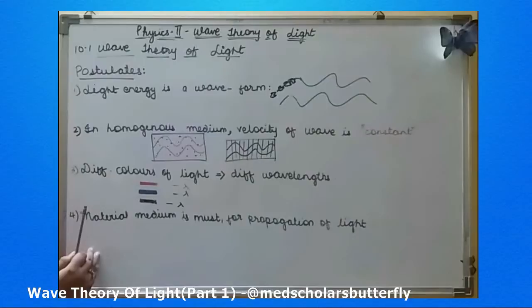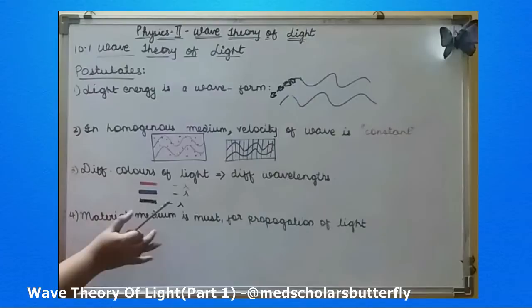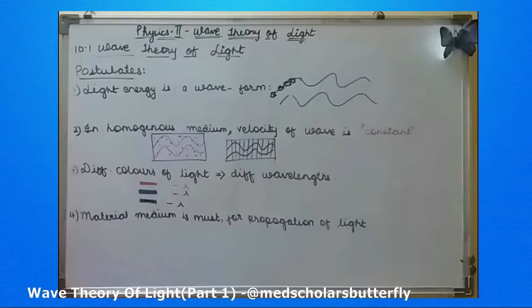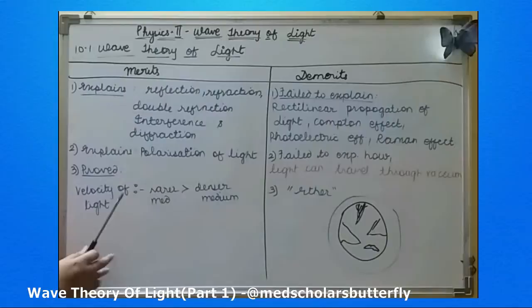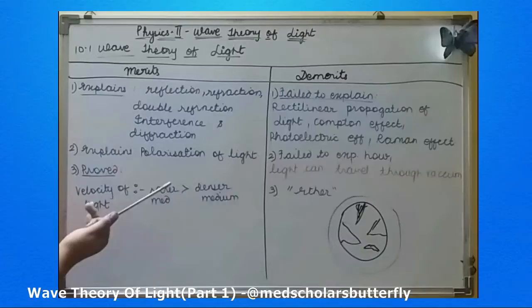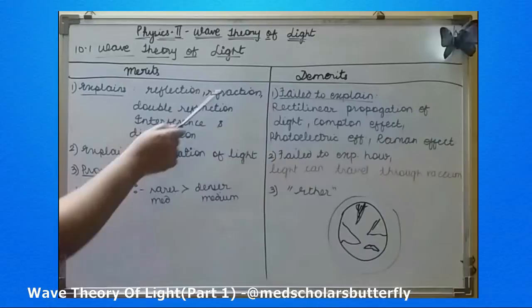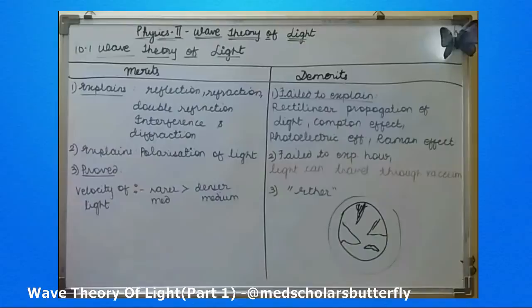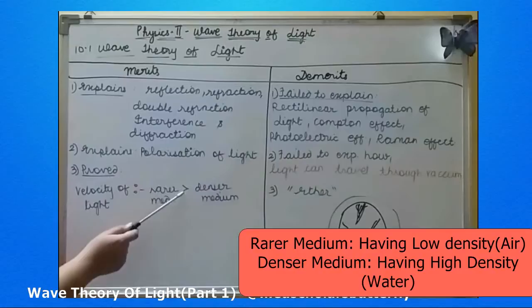Fourth: a material medium is necessary for propagation of light — for any light to transfer from one place to another, the medium is necessary, whether it is air or vacuum. These were just the postulates, meaning it is not a theory or a law, just a rough study. According to the theory, there are many merits of Huygens' wave theory of light which were successful in explaining reflection, refraction, double refraction, interference, and diffraction.